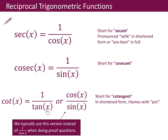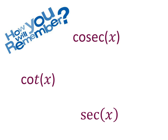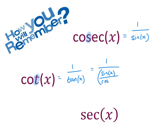Tan — 'silly cow' — sin over cos. Have a look at the third letter: S gives 1 over sin; T gives 1 over tan of x. We don't like to write 1 over a fraction, so cot of x is actually cos x over sin x. And sec — the third letter — is 1 over cos of x.